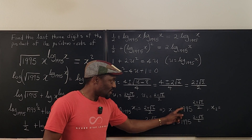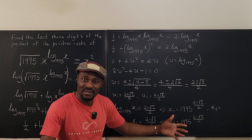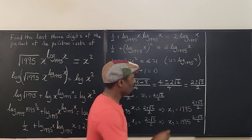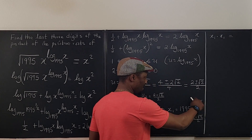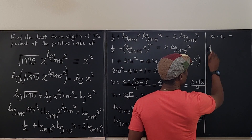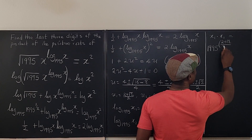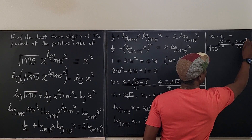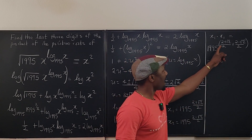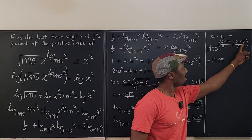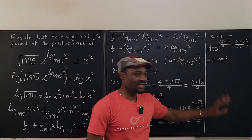Now we multiply the two roots together, since those are the only two roots found. x₁ times x₂ equals 1995 raised to the sum of the exponents: 1995^((2+√2)/2 + (2−√2)/2). The √2 terms cancel, leaving 4/2 = 2 in the exponent. So x₁ · x₂ = 1995². This is now a number theory problem.